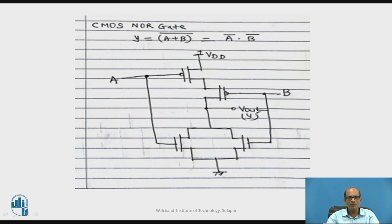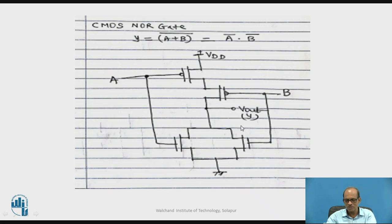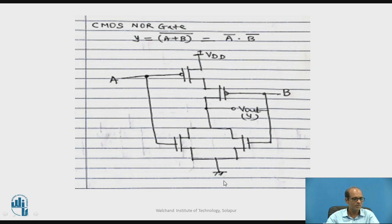In CMOS logic, from the output to VDD, the circuit is called the pull-up network, which is designed using only PMOS. From the output to ground, the circuit is called the pull-down network, which is designed using only NMOS. The pull-up network connects the output to VDD and the pull-down network connects the output to ground. The pull-up network and pull-down network are duals of each other — where the pull-up has PMOS in series, the pull-down has NMOS in parallel; PMOS becomes NMOS and series becomes parallel.